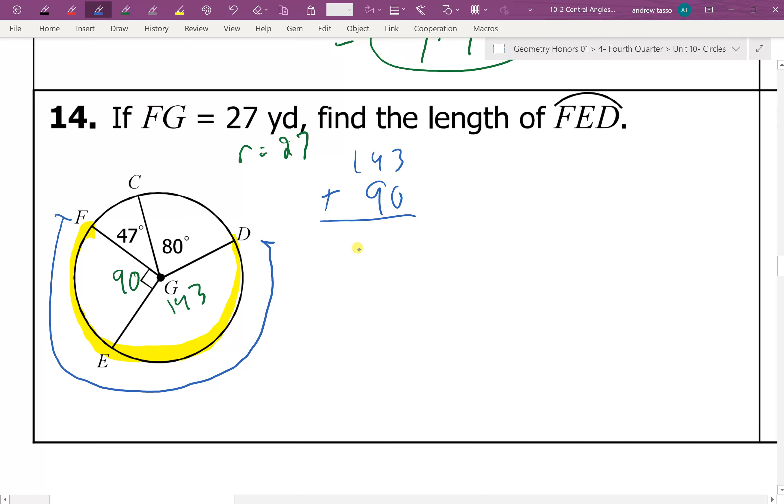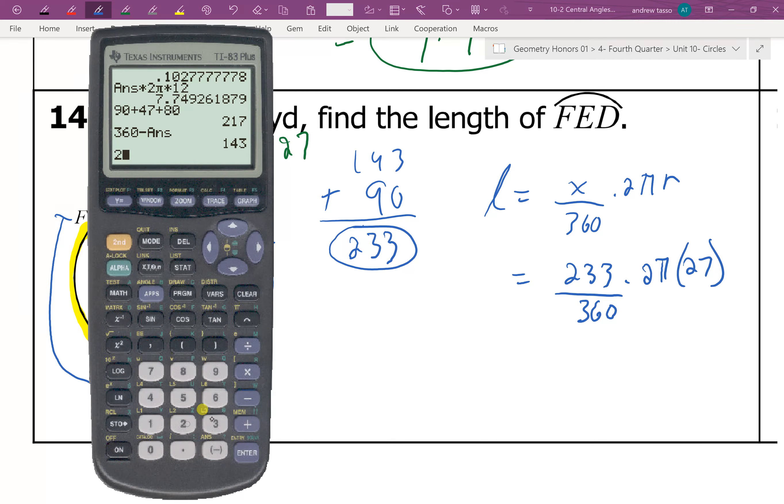So remember the formula now. The formula is arc length is x over 360 times 2 pi r. So x would be the degree measurement of the arc over 360 times 2 pi times the radius of, in this case, 27.